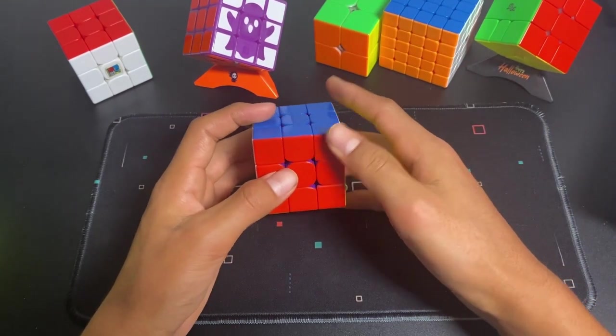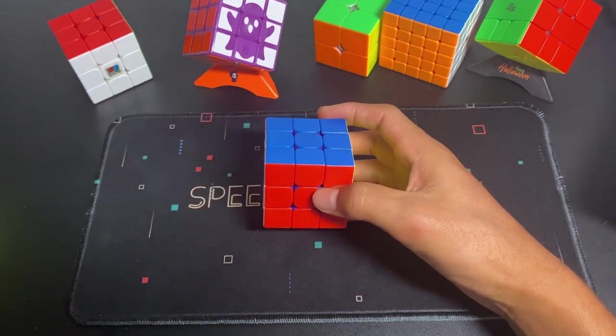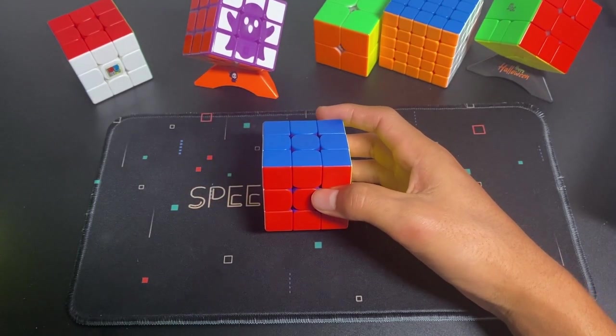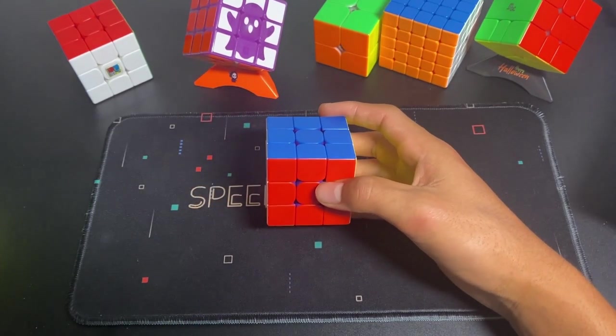So the first step is to just learn full OLL and full PLL, otherwise known as one-look OLL and one-look PLL.